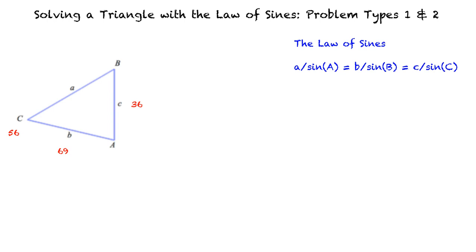We know side c and its opposite angle C, and we also know side b, so we can use the Law of Sines to find sine of angle B.